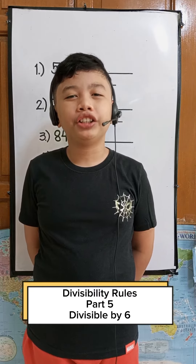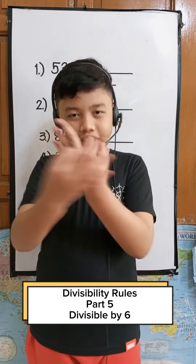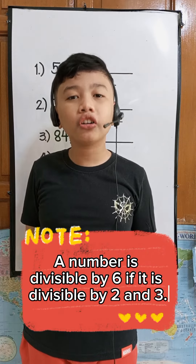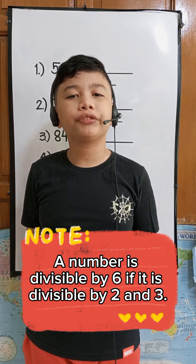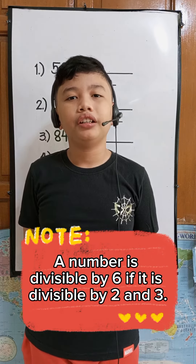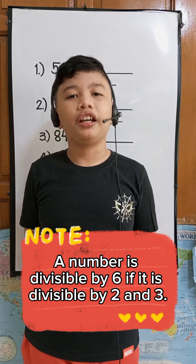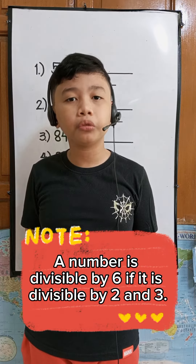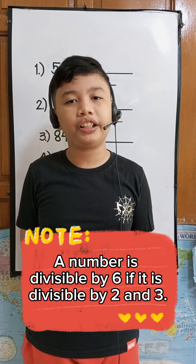For today's video, I'm going to teach you how to determine if a number is divisible by 6. A number is divisible by 6 if it's also divisible by 2 and 3. Let us answer the following: put a check mark if the number is divisible by 6 and X if not. Hint: use the divisibility rules by 2 and 3 to find out if it's divisible by 6.